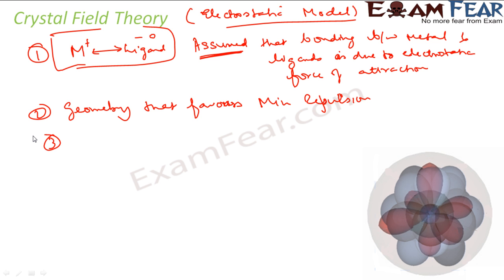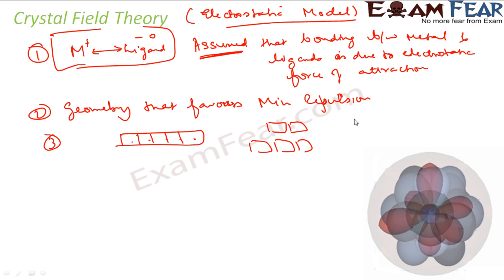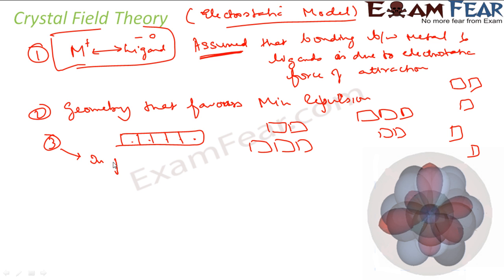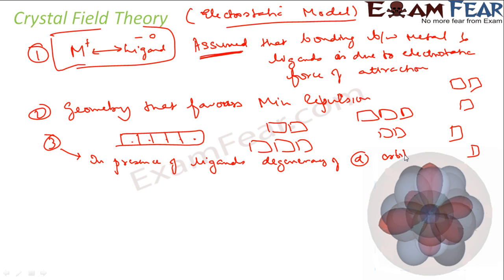The third thing: in the presence of ligands, the d orbitals of the metal split into different energy states. Normally we draw five d orbitals all at the same energy level — they are called degenerate orbitals. But in the presence of ligands, this degeneracy of d orbitals is lost. They split into different levels — sometimes into two groups, sometimes into different arrangements — depending on the geometry.